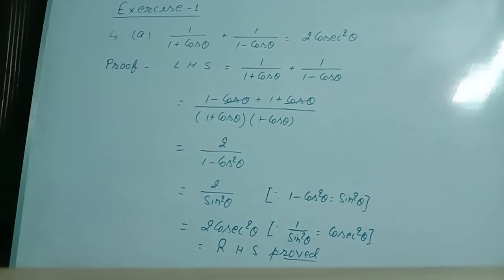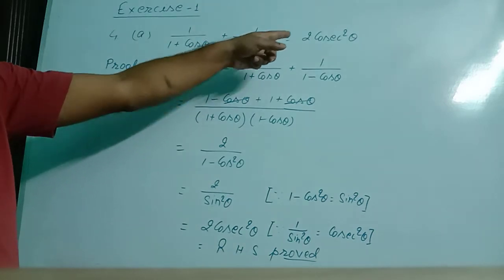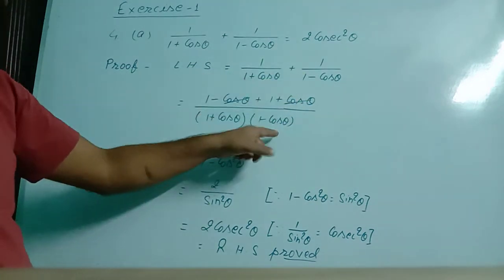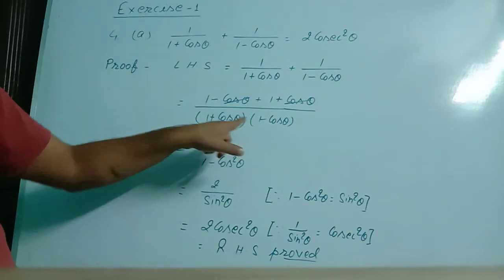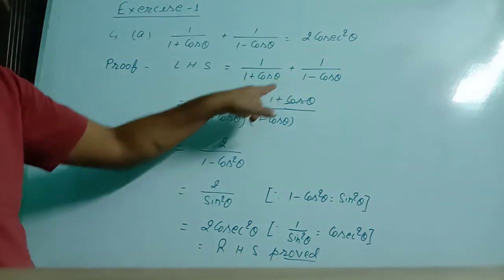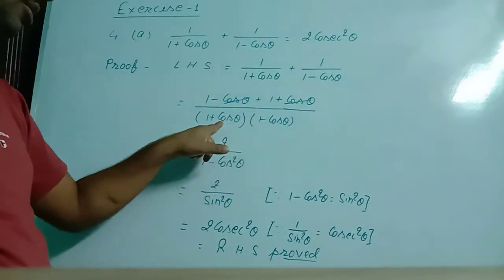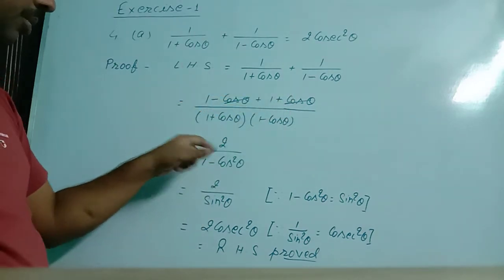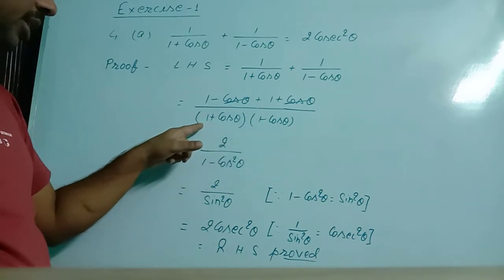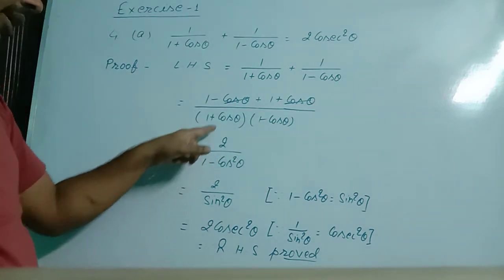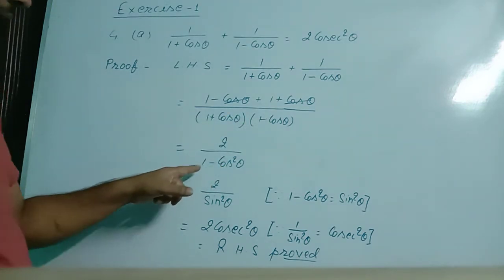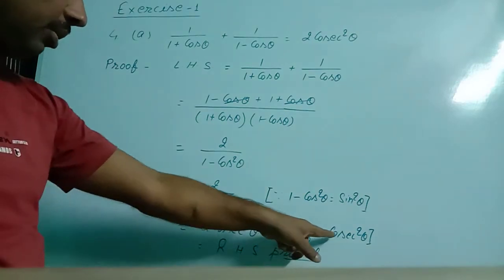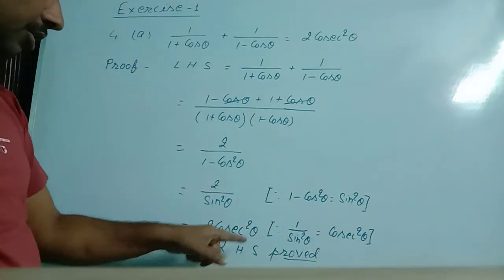Question number 4a: prove that 1 by 1 plus cos theta plus 1 by 1 minus cos theta equal to 2 cosec square theta. LHS is 1 by 1 plus cos theta plus 1 by 1 minus cos theta. LCM is 1 plus cos theta into 1 minus cos theta. Dividing the LCM by each denominator gives: 1 minus cos theta plus 1 plus cos theta in the numerator. The minus cos theta and plus cos theta cancel, leaving 1 plus 1 equal to 2. The denominator is in the form of A plus B into A minus B, so A square minus B square equals 1 minus cos square theta, which equals sin square theta. So this becomes 2 by sin square theta, and 1 by sin square theta equal to cosec square theta, so the answer is 2 cosec square theta — that is RHS, proved.